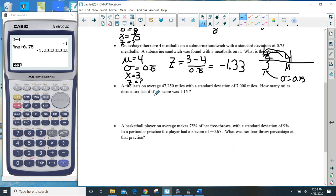A tire lasts an average of 47,250, writing is awful I apologize, with a standard deviation of 7,000. How many miles does a tire last if the Z is 1.15?